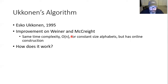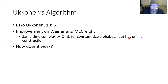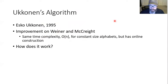Ukkonen's algorithm was proposed by Esko Ukkonen in 1995. It's an improvement on the Weiner and McCreight algorithms because it is linear for constant-size alphabets. For a variable-size alphabet, it's O(N log N). But it has online construction, which makes it really powerful — picture a character stream where you process characters as they come in and add them to the tree. The tree is not finalized until it sees the terminating character, but it can add to the tree as it receives the string.